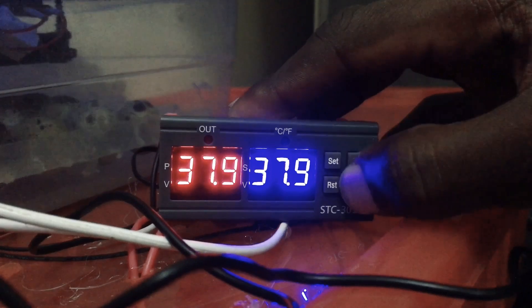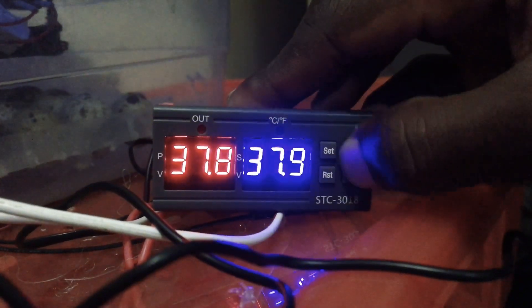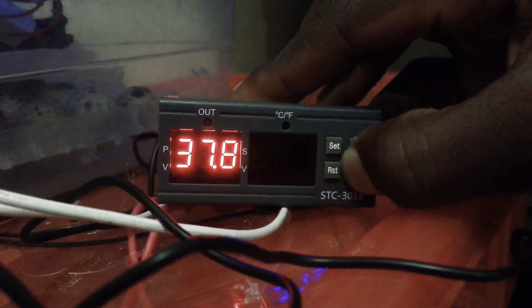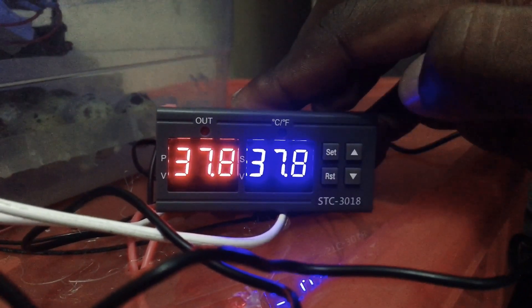Make sure it's blinking before you start moving these keys up and down. Our temperature right now we want it to be at 37.8, and you press it again until it stops blinking. That's your temperature, you've set your temperature.